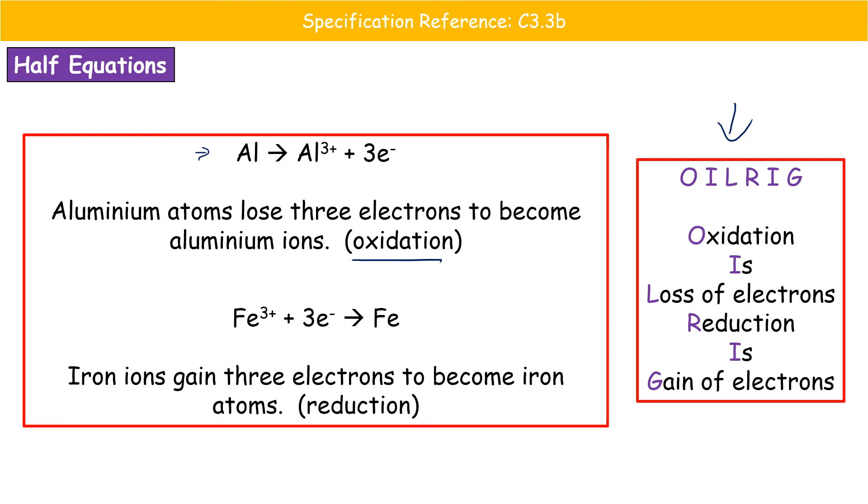For the iron ions, they are gaining three electrons. Therefore, reduction is gain of electrons. That is the reduction. So together we have both a reduction and an oxidation happening. It is a redox reaction overall.